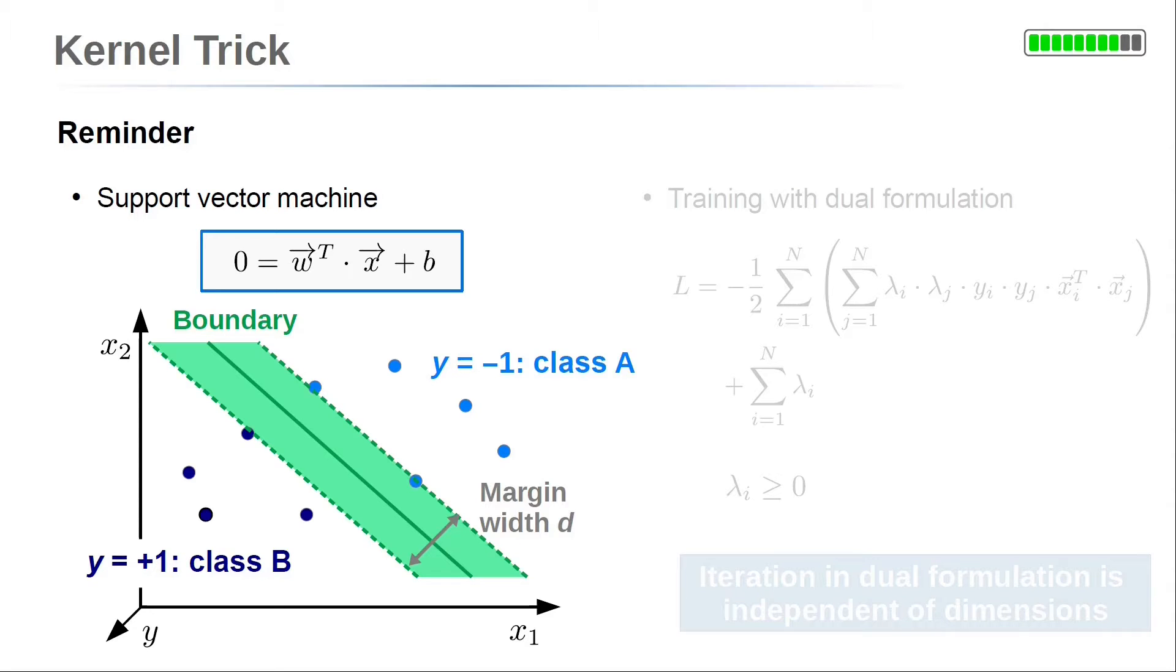We considered the support vector machine model to separate two classes, class A and class B. The model describes the separation geometrically by a boundary. And so far this boundary was linear, a so-called hyperplane.